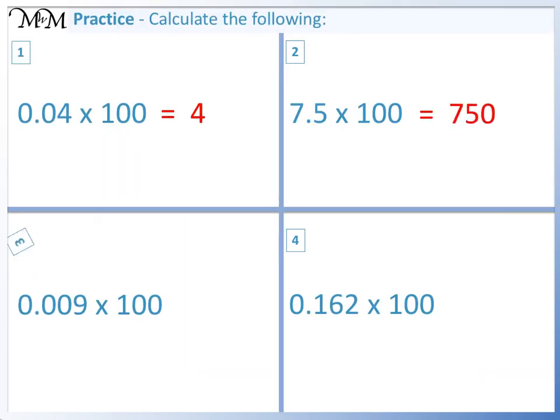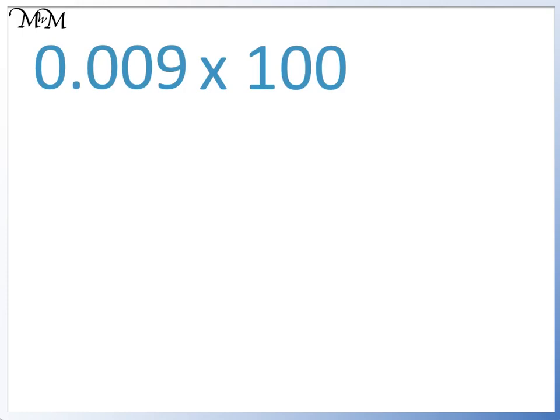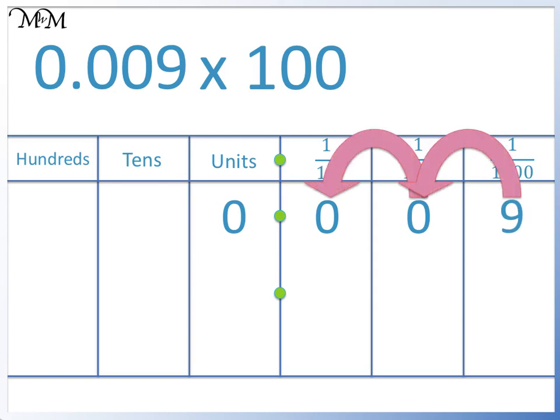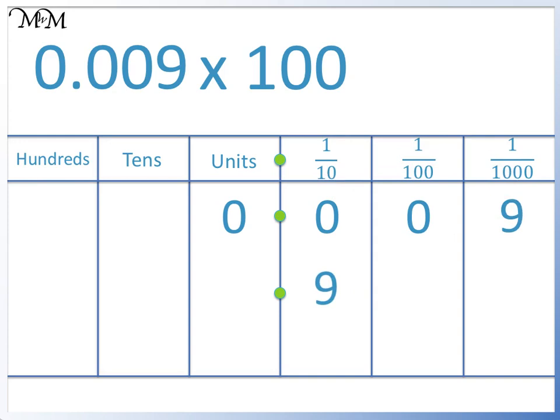Question 3: 0.009 times 100. We move the 9 two places to the left. There are no digits to the left of the decimal point, so we write a zero in the units column. 0.009 times 100 equals 0.9.